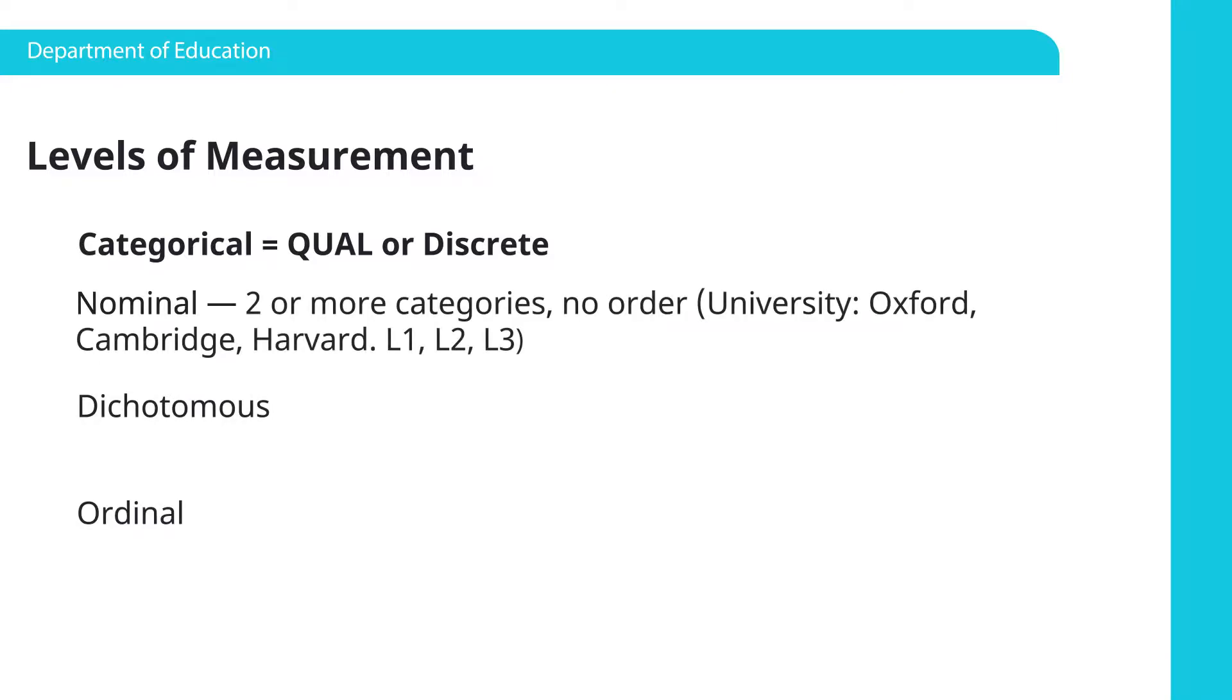Now, nominal have two or more categories. For example, the different types of universities. There's no order here. So Oxford, Cambridge, Harvard. So there are two or more categories, but they're not ordered. They don't need to be in any specific order. Or your first language, your second language, or your third language. That's a nominal variable.